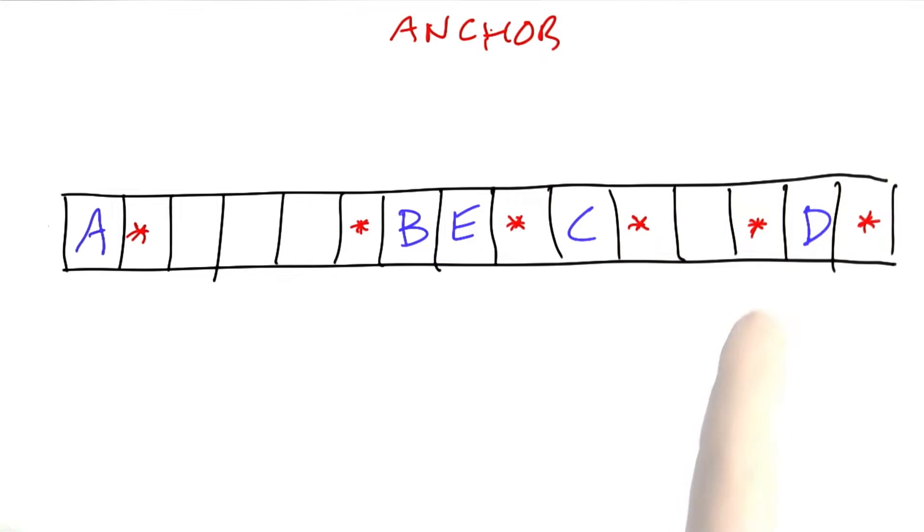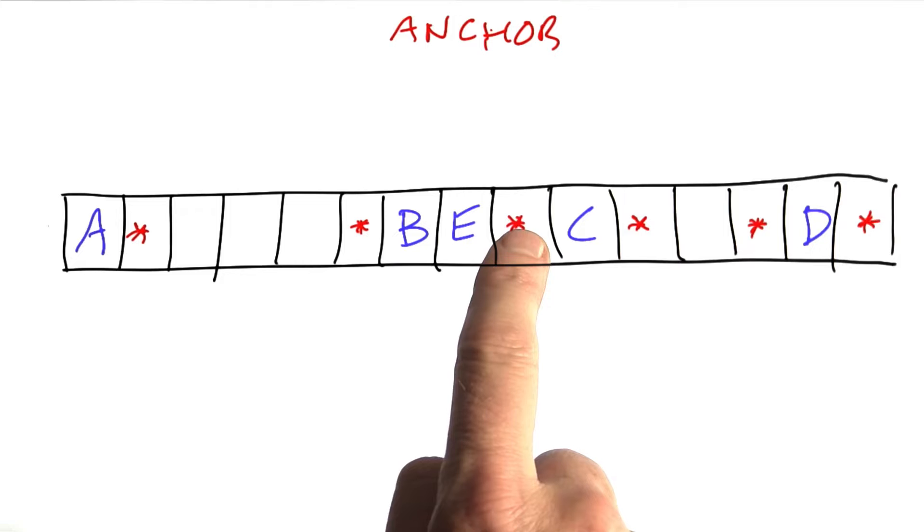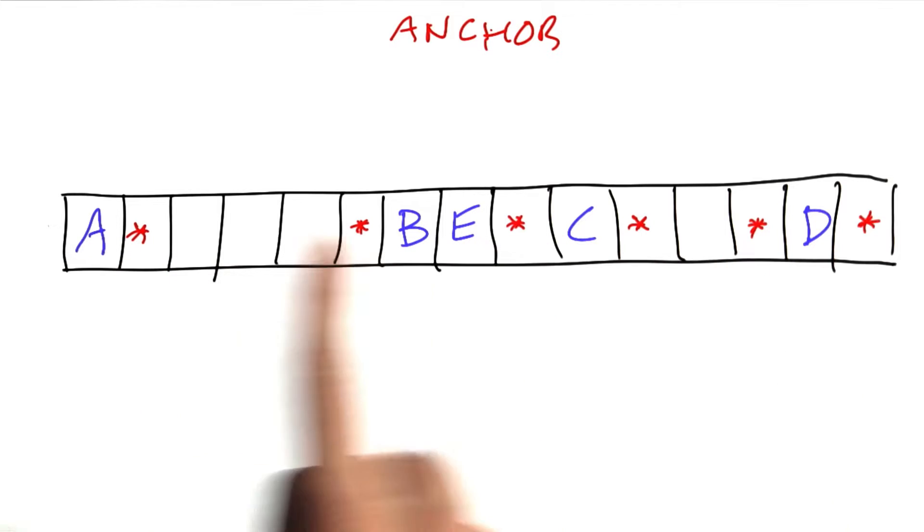Now the anchor squares do have to be adjacent to an existing letter but they don't have to be adjacent all within a row. They can be adjacent in either direction.